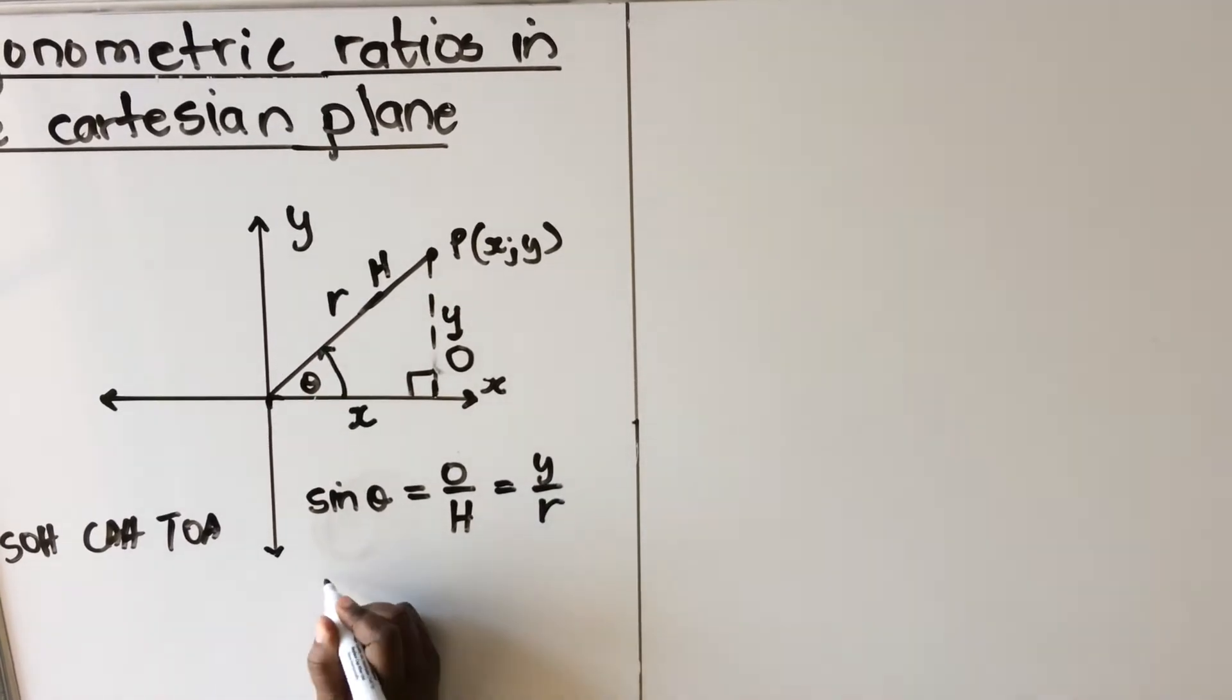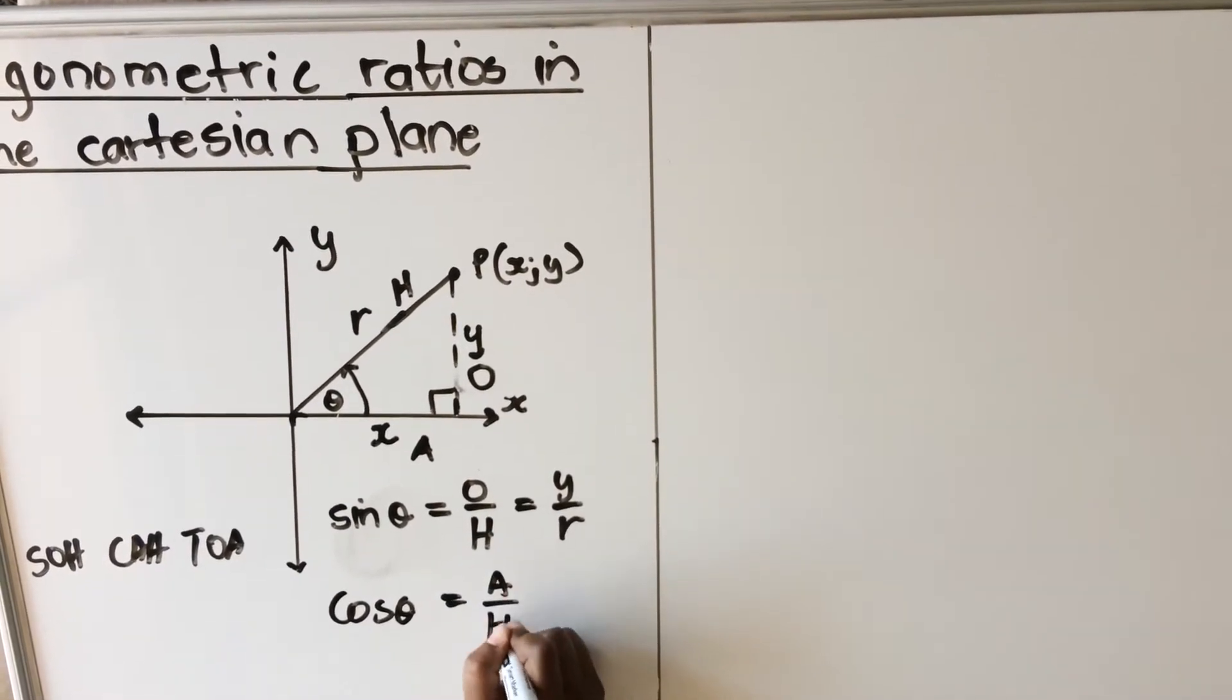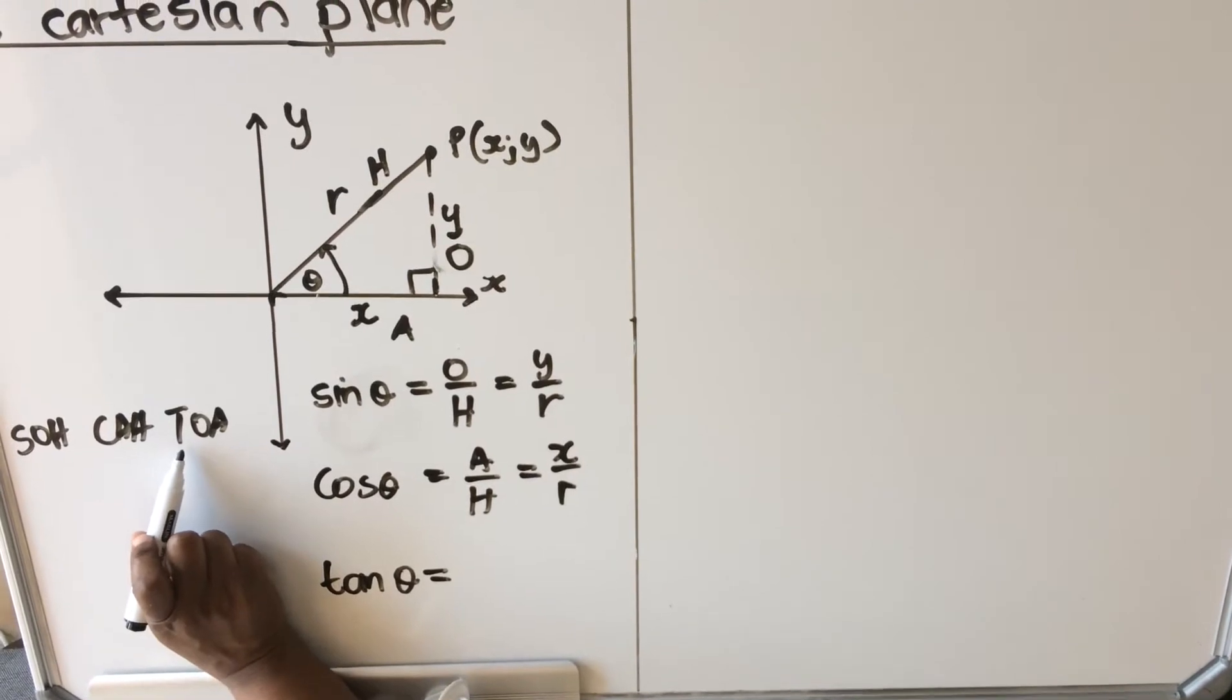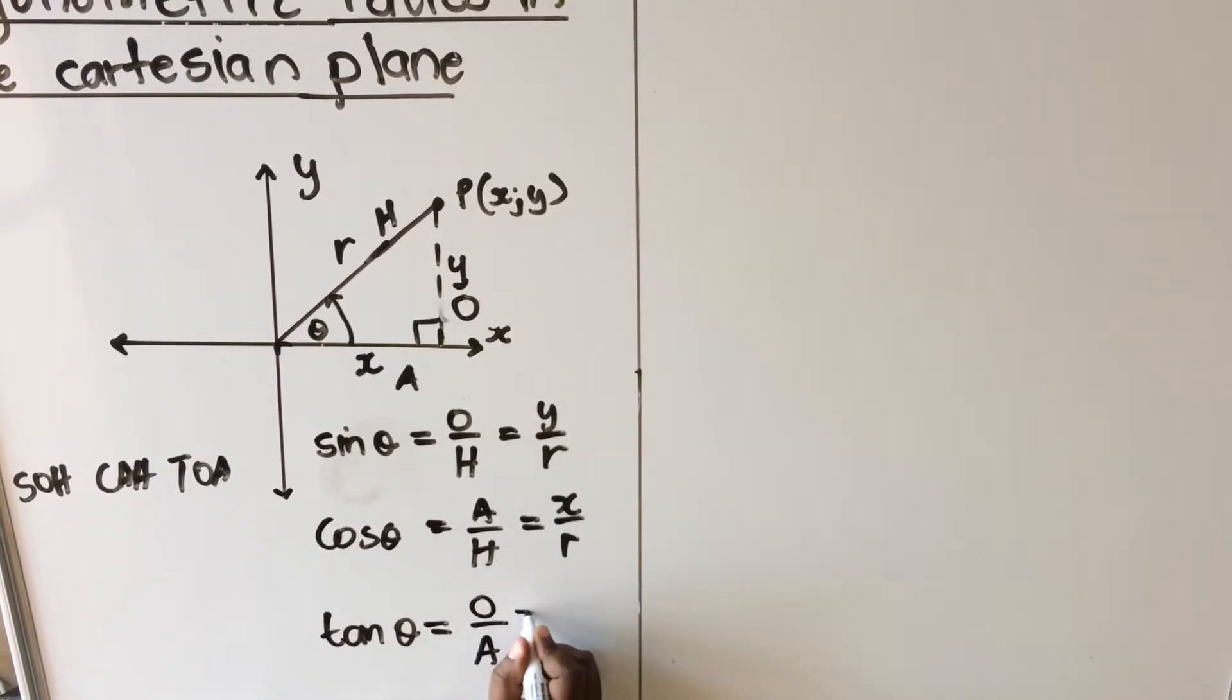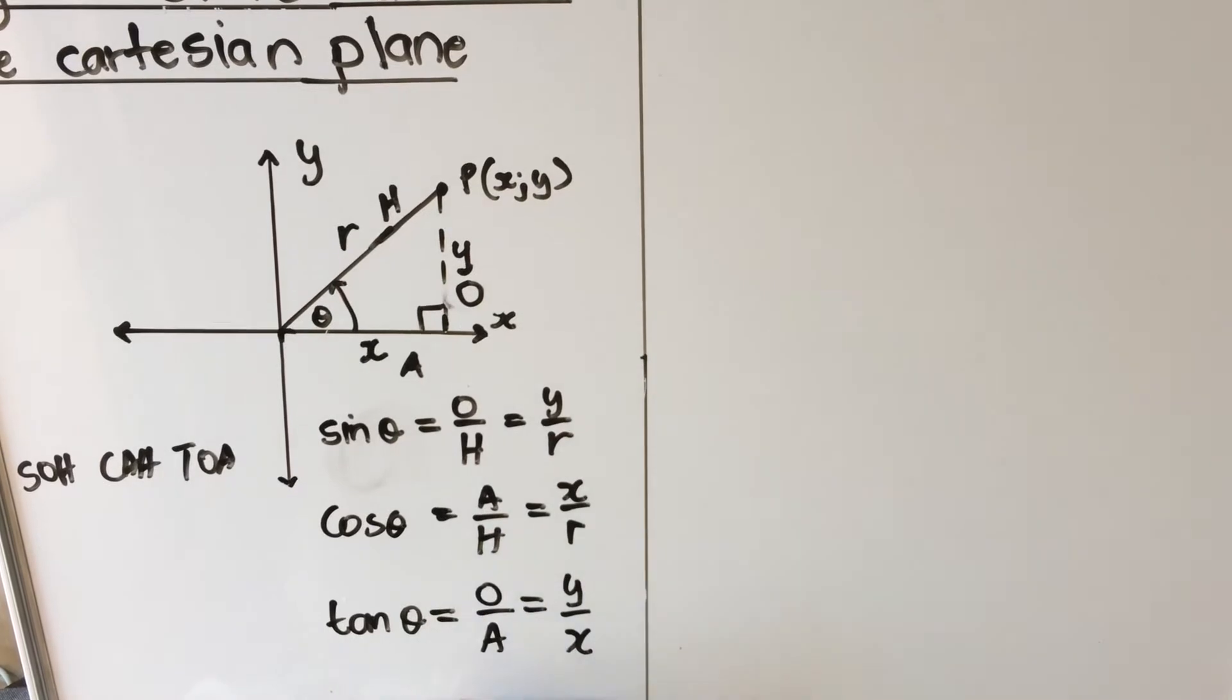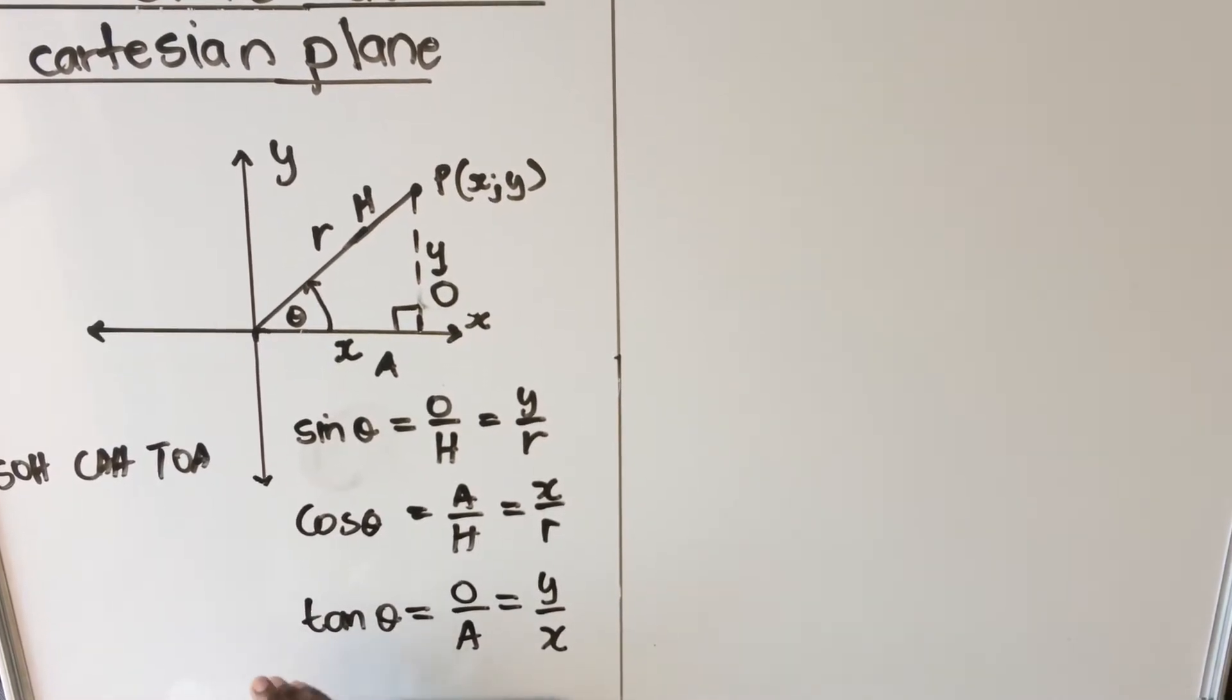Then your cos theta is adjacent over hypotenuse. Your adjacent is your x and hypotenuse is your r. And then tan theta is opposite over adjacent - opposite is your y and adjacent is your x. So this is how when you are asked a question on a Cartesian plane, use these ones. It's easier if you use the x and r and the y because that's what you have on the Cartesian plane.